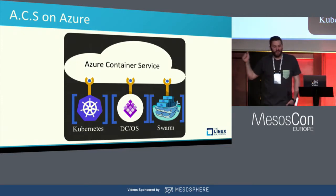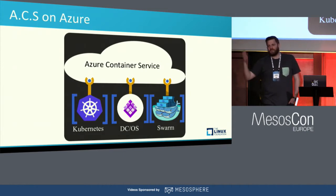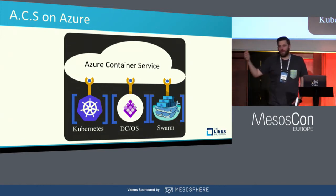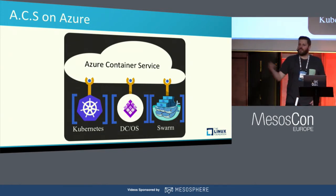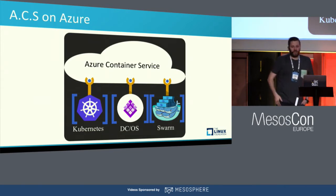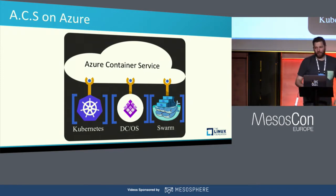That's the only marketing slide I have — ACS on Azure, Azure Container Services. The only preparation I made before this presentation was deploying a cluster with just a few clicks. I deployed a DCOS cluster, but you also have the ability to deploy Swarm or Kubernetes. We just announced a new service called AKS, which is a managed Kubernetes on Azure. But that's not the focus today.